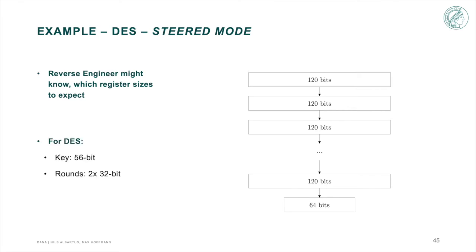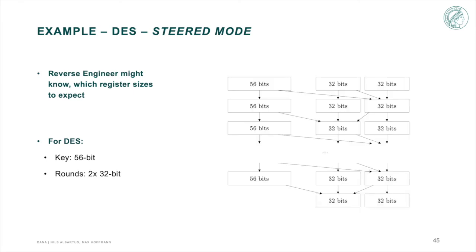Here, we would expect to find registers of 56-bit for the key and two 32-bit registers for the round states. If we now use the steered mode and instruct DANA to give a higher priority to a register of this size, we end up with this graph. The great thing about this is that a reverse engineer can now easily distinguish between key and round registers and even recognize the unique Feistel structure of the DES.